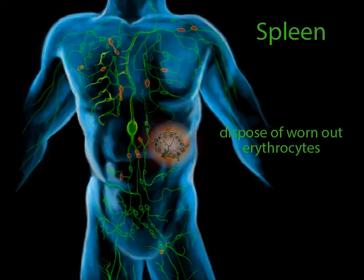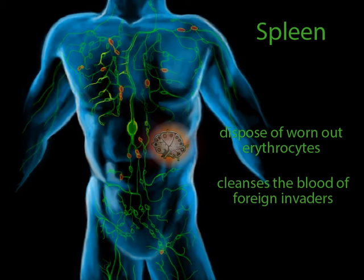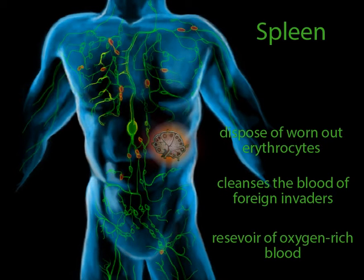Red blood cells have a short lifespan. As a result, roughly 2 million erythrocytes die every second. They must be removed from the blood, and that's another job of the spleen. Before the blood leaves the spleen through the veins, it passes through the red pulp. Macrophages in the red pulp engage in phagocytosis to remove both foreign invaders and worn-out red blood cells. The third function of the spleen is to act as a reservoir for oxygen-rich blood. The spleen holds more blood than is necessary for its own metabolism, serving as a backup supply. If the body detects blood loss due to hemorrhage, the sympathetic division of the ANS stimulates the smooth muscles in the capsule of the spleen to contract, pushing the backup supply of blood into the bloodstream and compensating for the blood loss.